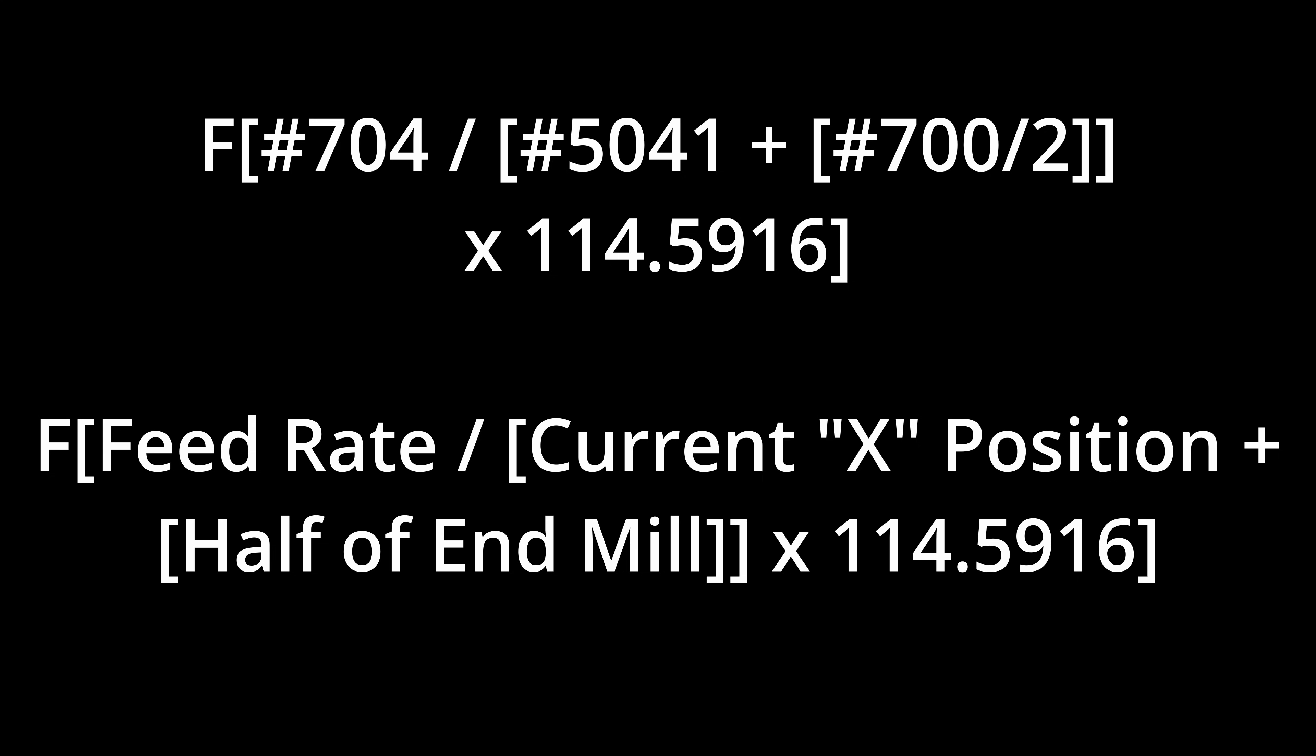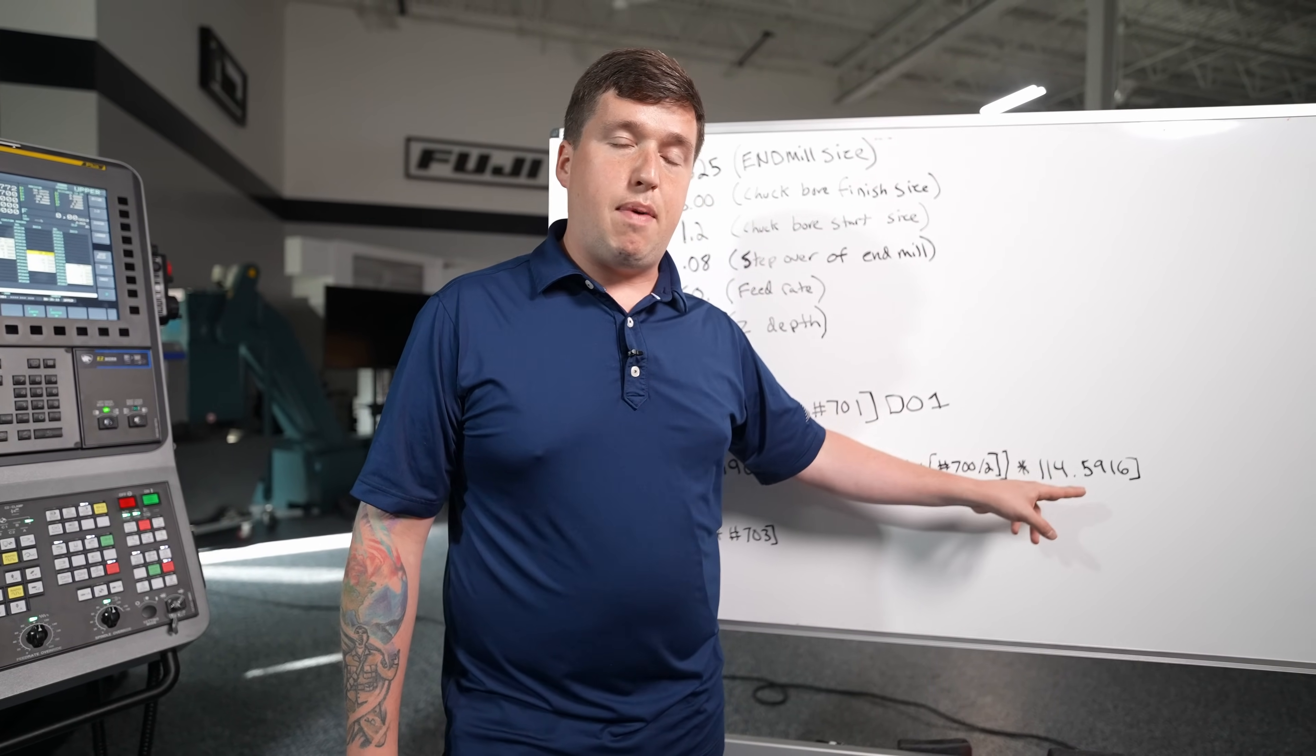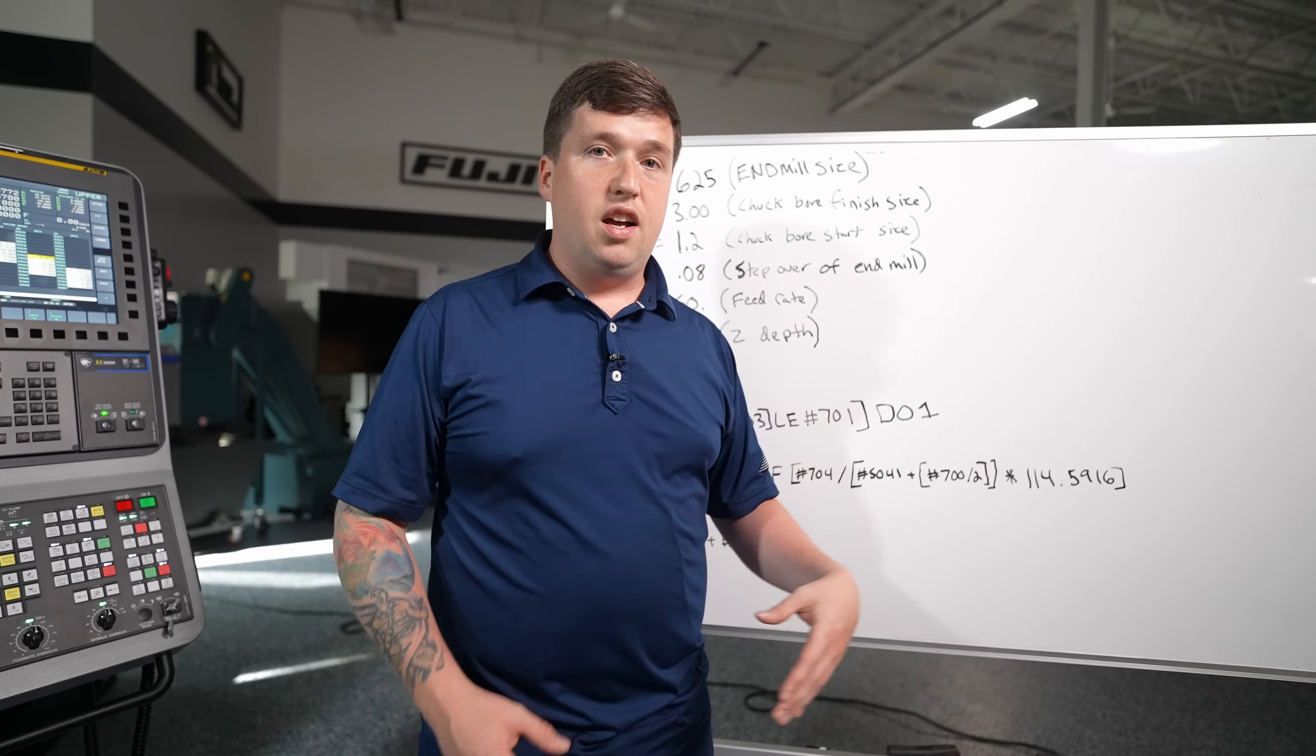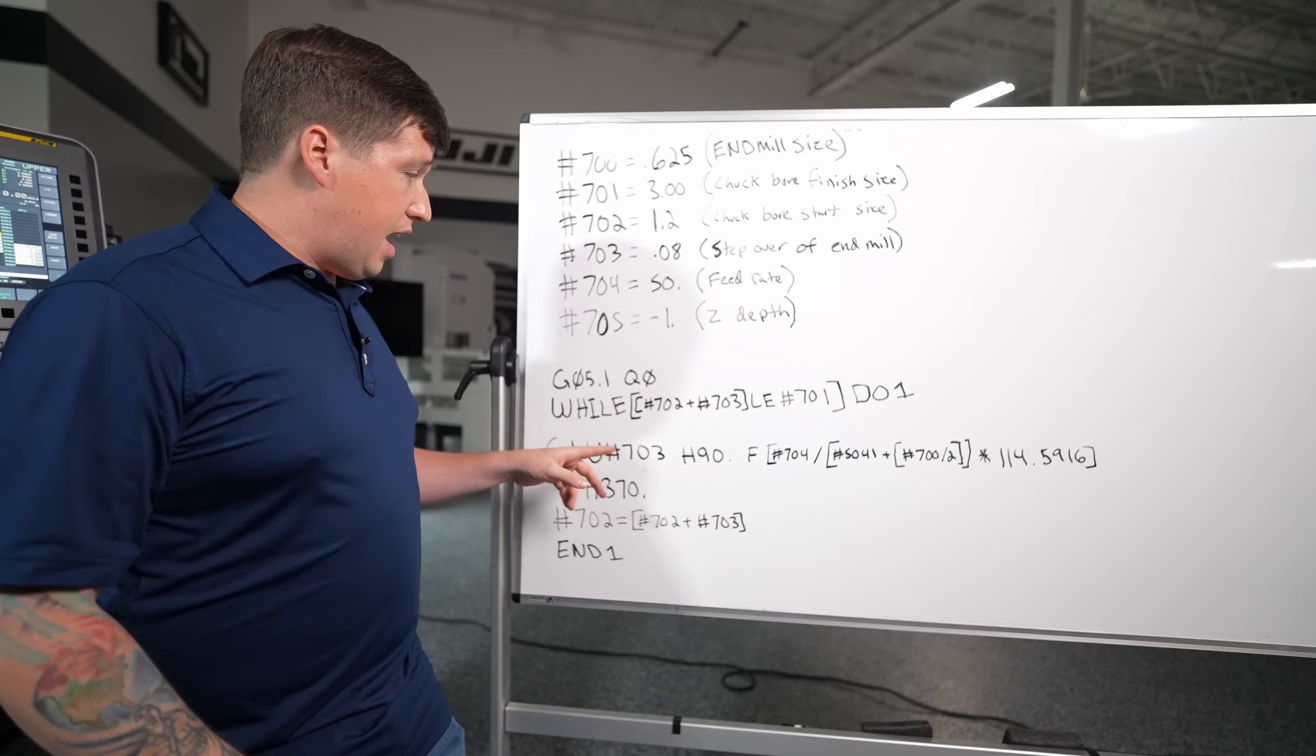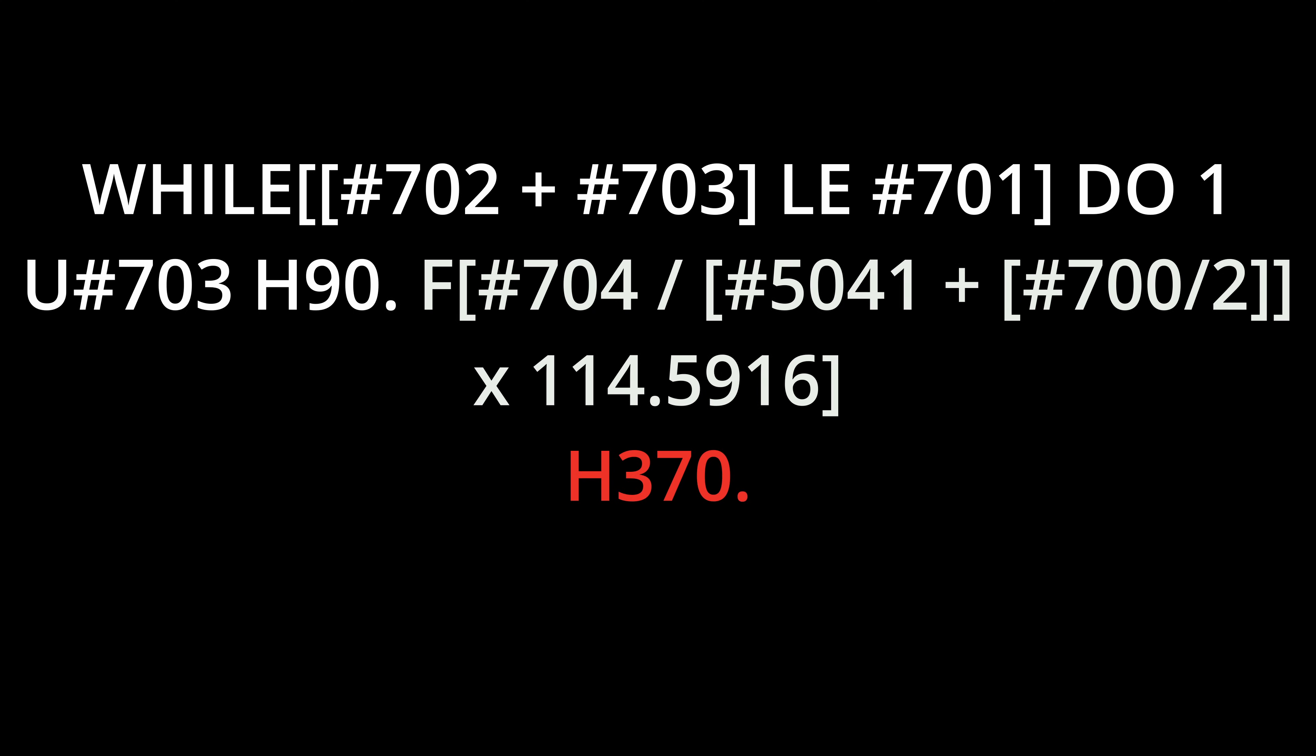So it's going to say again our inches per minute divided by our current x position our diameter plus half of our end mill times 114.5916. Now that is just a constant. I'm pretty sure it's 360 divided by pi. That is going to get us the constant we need to multiply all this by to calculate our degrees per minute based off of what our inches per minute would be at the diameter we're working at. Now that we've input our feed rate and we've moved up a little bit in x we need to say h of 370.